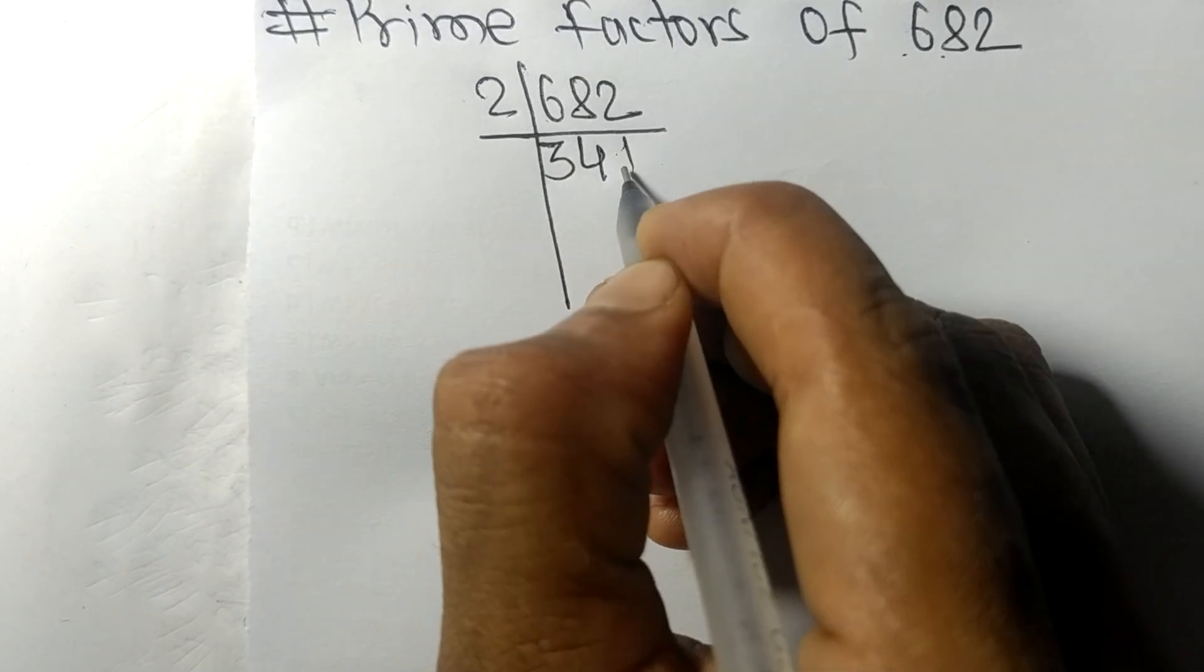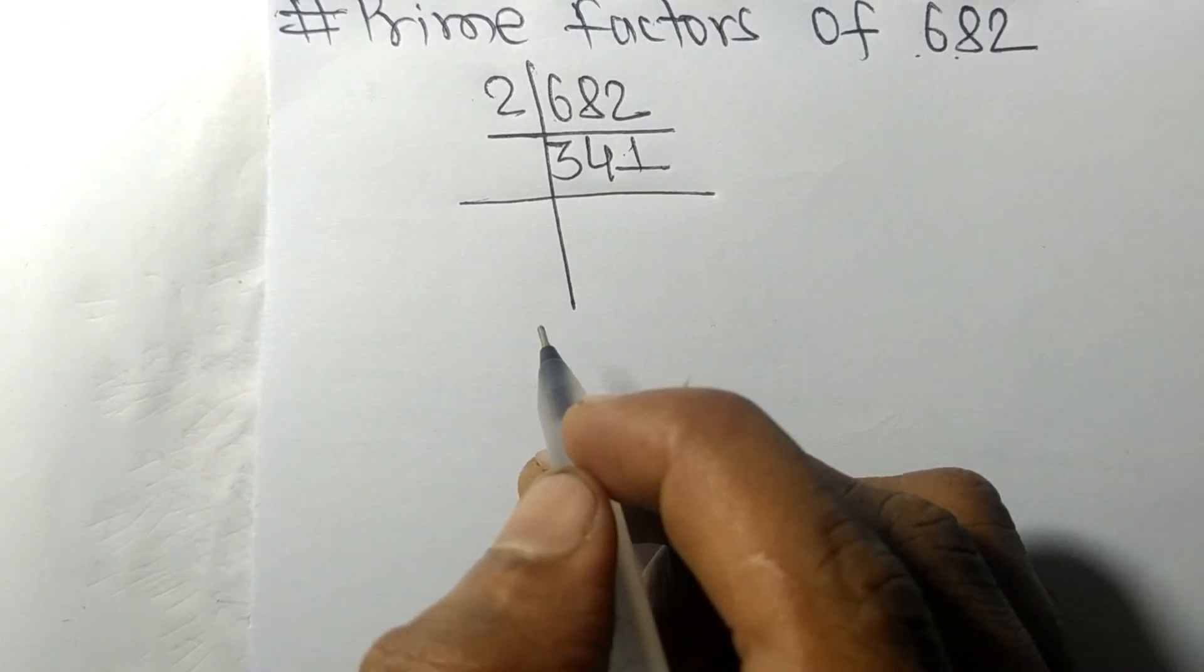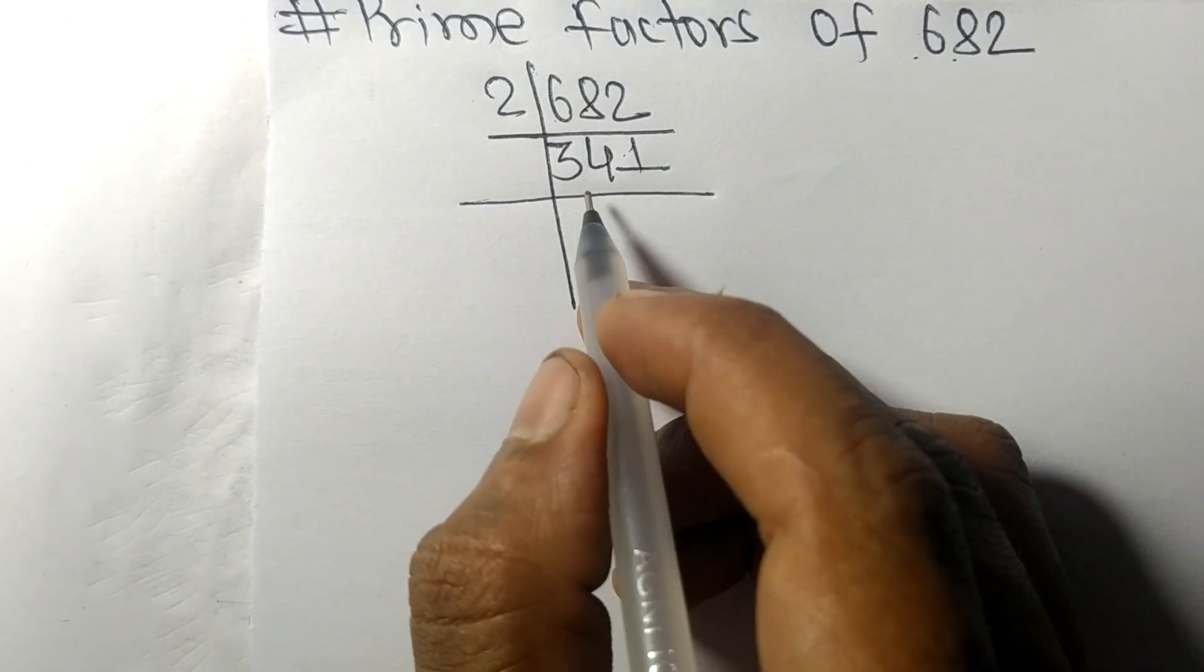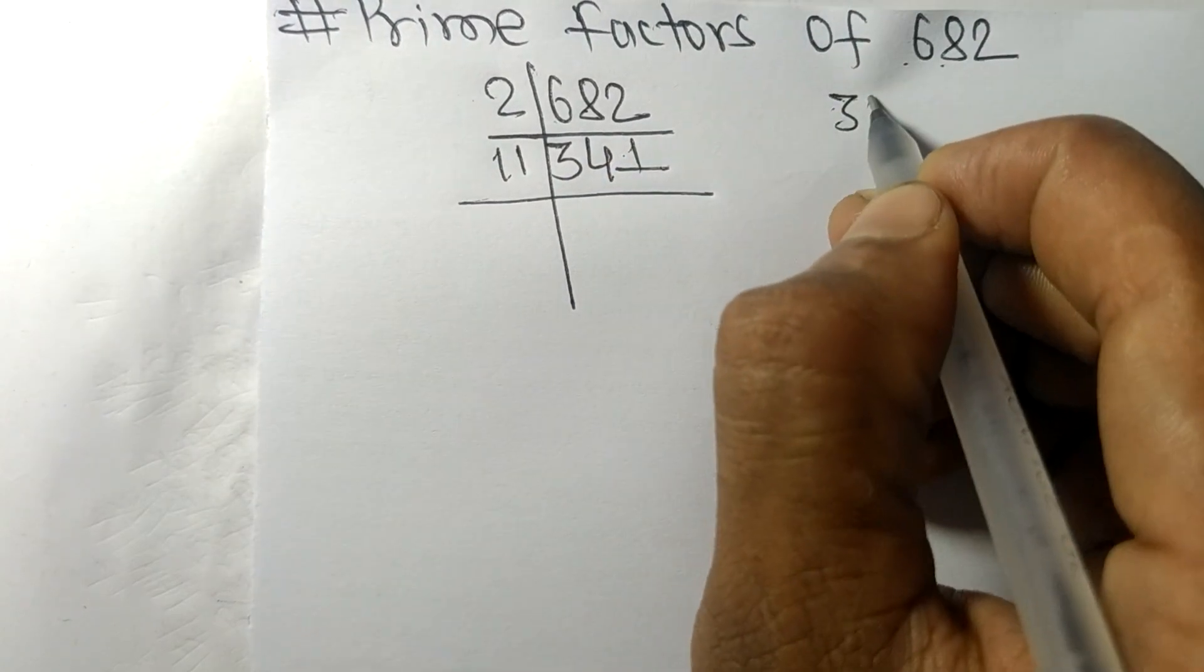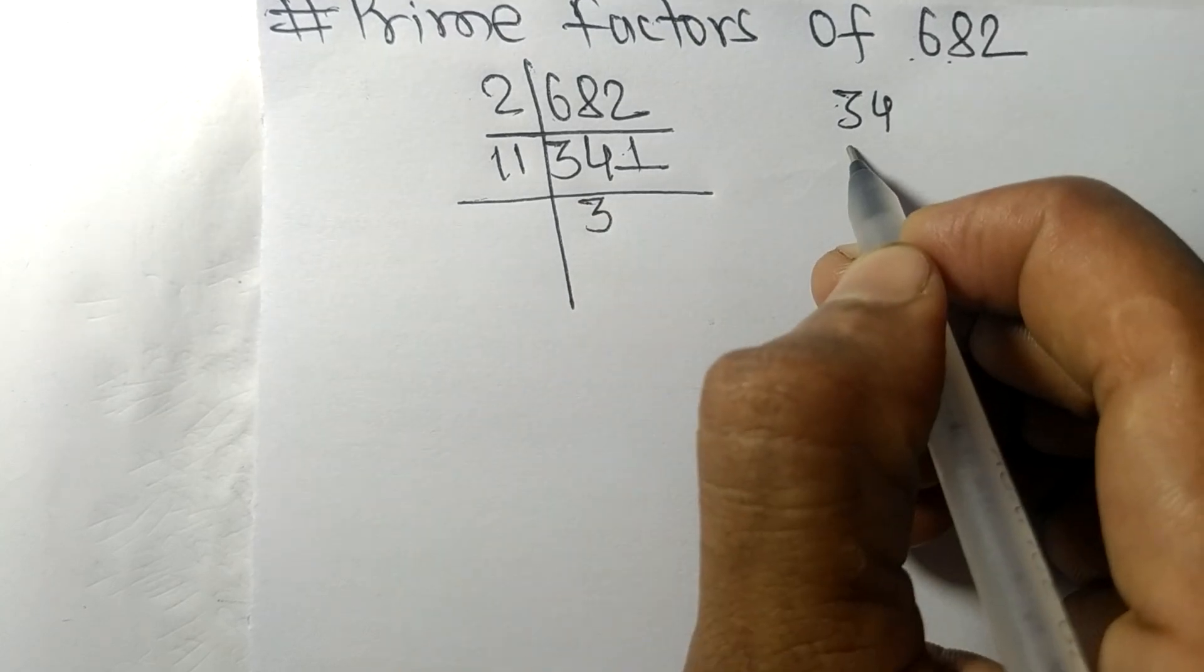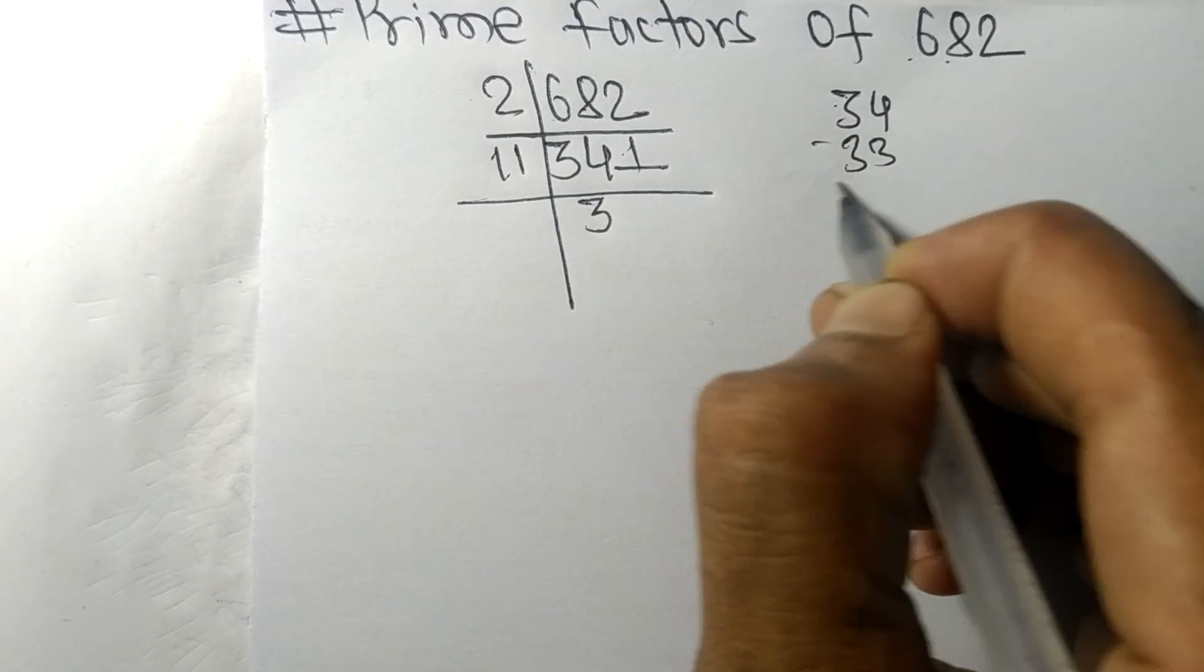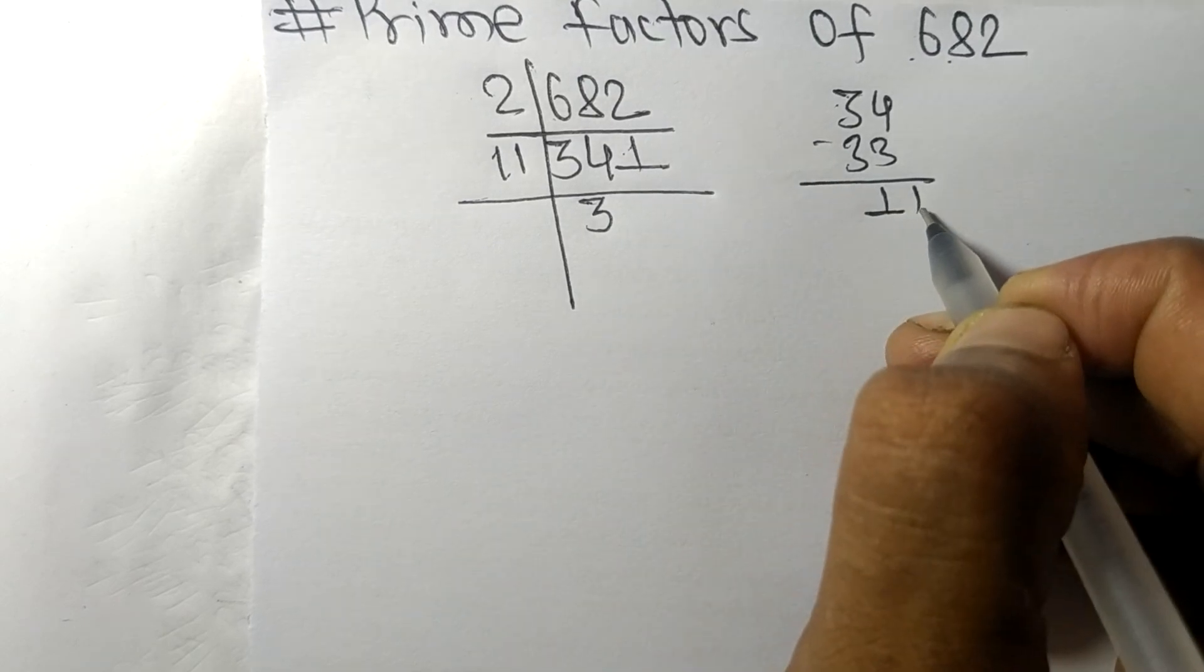So now we got 341 which is exactly divisible by eleven. So we have 34, eleven times three equals thirty-three, and we get here one. And this one, eleven times one equals eleven.